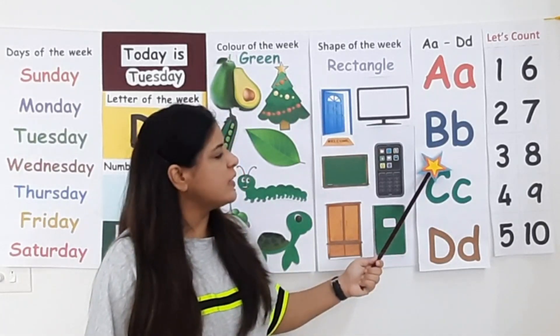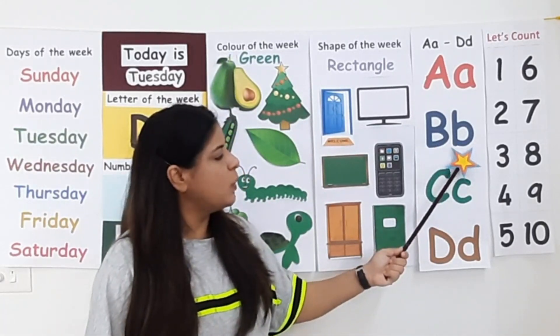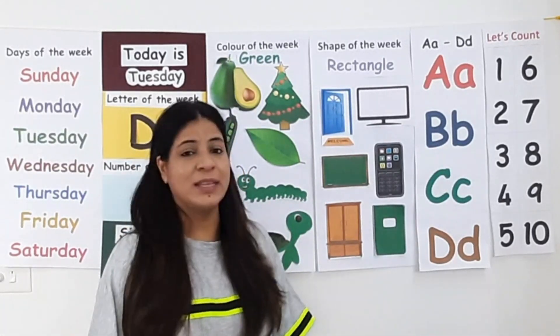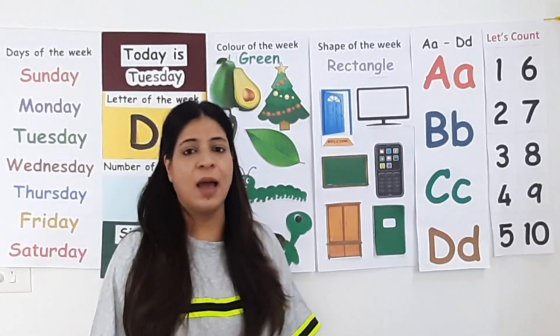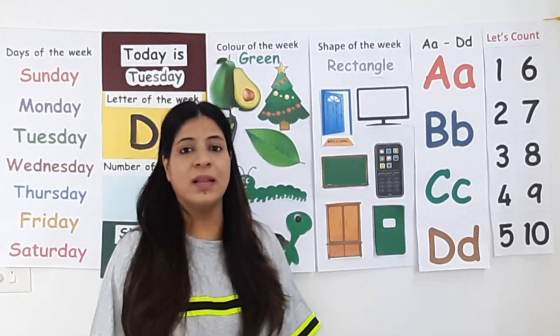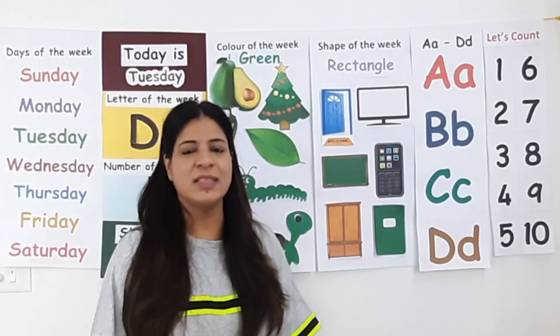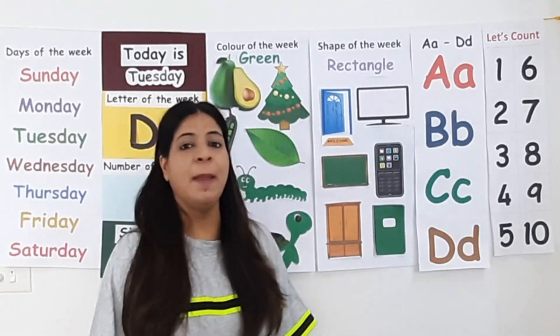This is uppercase letter B. This is lowercase letter B. Letter B makes the sound B. Letter B makes the sound B. Repeat after me: B.